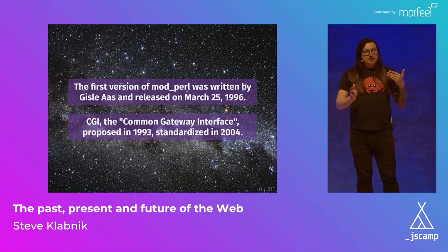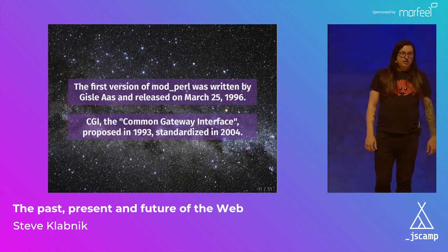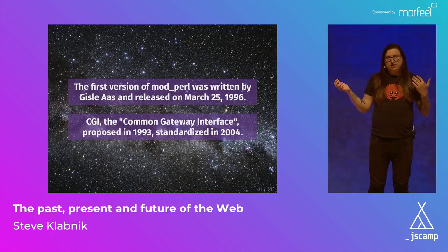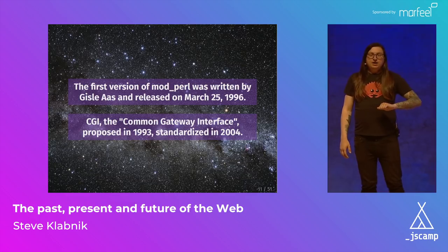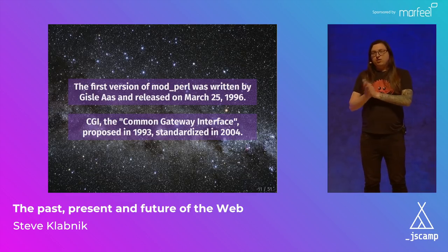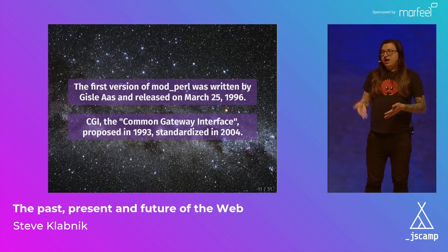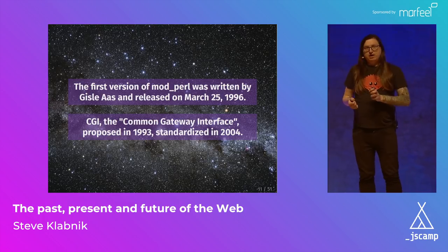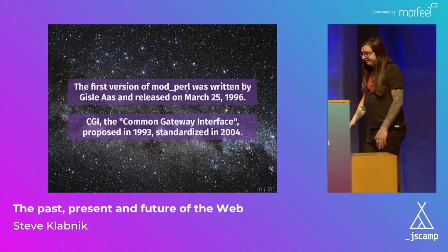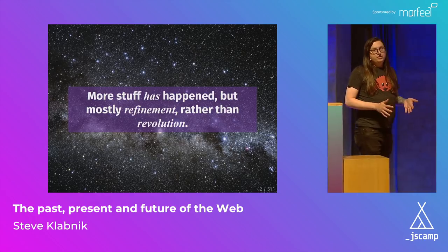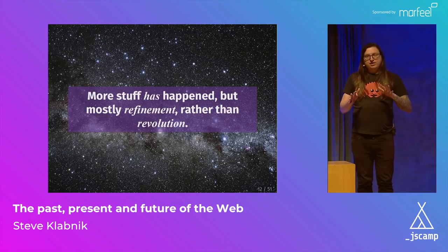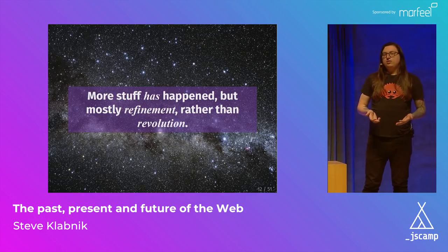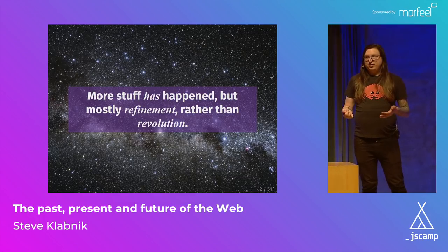The way these things interacted was through CGI, the Common Gateway Interface, proposed in 1993. They didn't actually standardize it until 2004, but it was pretty much standard — nobody went through the motions of formally standardizing it. There was then a mod CGI, similar to Mod Perl, that said: if we're going to make programming languages generate web pages, maybe we should make a standard interface. Even our current model of having a program generate a web page goes back almost 20 years. A lot has happened in those years, but mostly it's been refinement of original ideas rather than a total rethink.